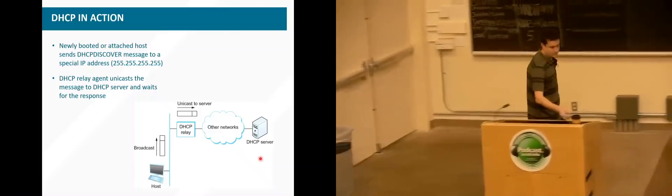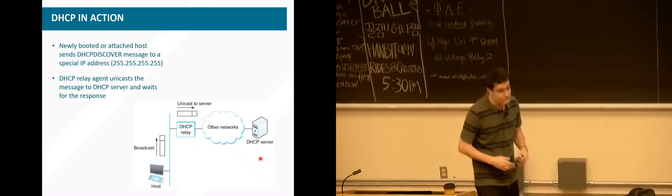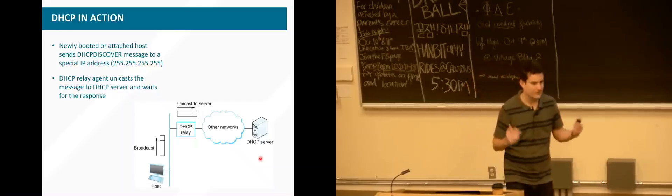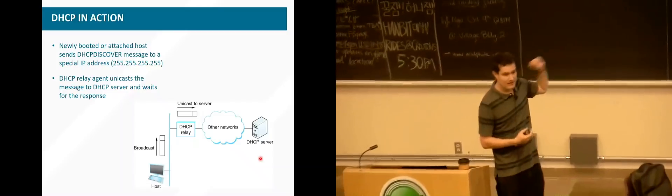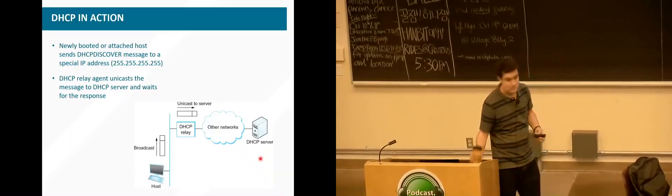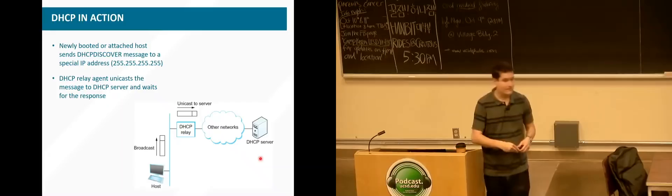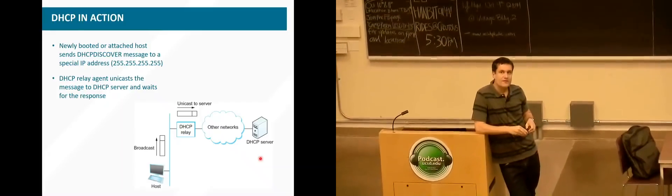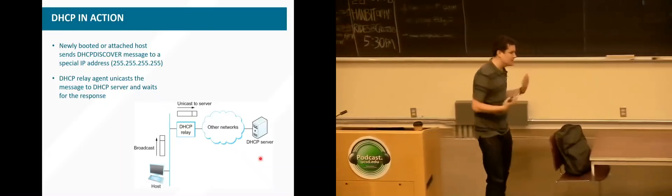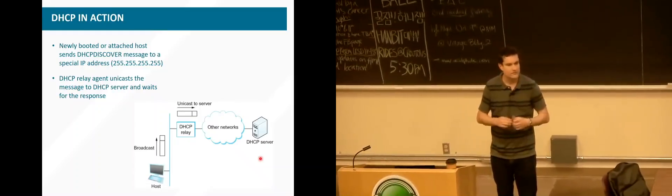DHCP — Dynamic Host Configuration Protocol — assigns you an IP when you first join the network. Regarding the point that anyone can overhear a Wi-Fi message to the router: I'll defer the man-in-the-middle question for now. It's just to say that some network technologies are fundamentally broadcast technologies — there's no way to send a message to just one other person; you have to send it to everyone.